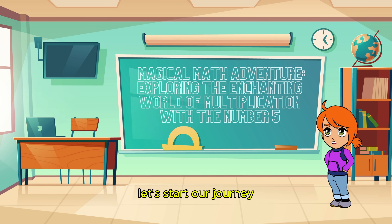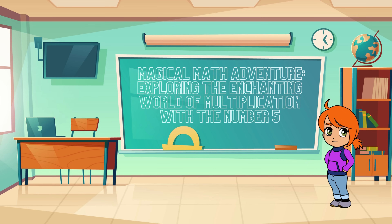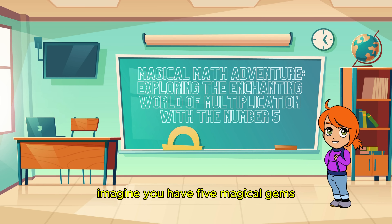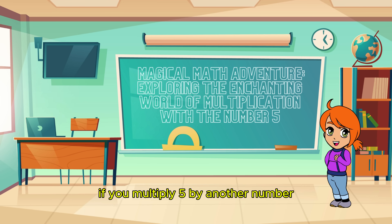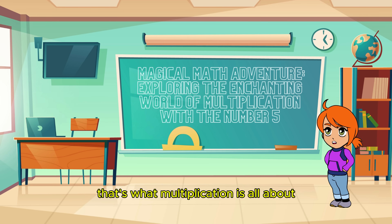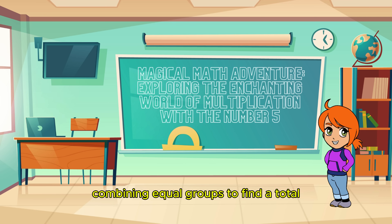Let's start our journey by understanding the basics of multiplication. Imagine you have 5 magical gems, and you want to know how many gems you'll have if you multiply 5 by another number. That's what multiplication is all about — combining equal groups to find a total.